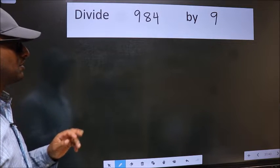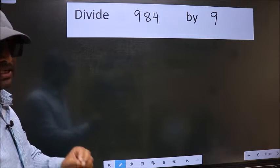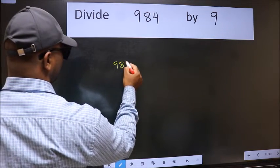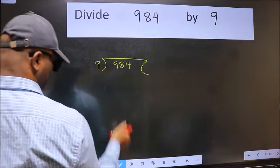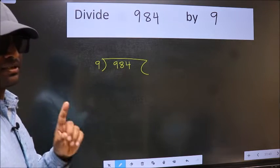Divide 984 by 9. To do this division, we should frame it in this way. 984 here and 9 here. This is your step 1.